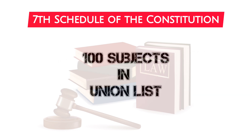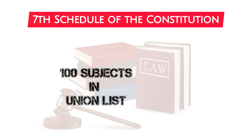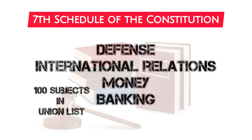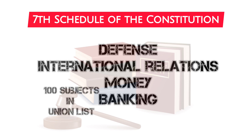There are 100 subjects on the Union list that are solely the responsibility of the Union government. Defense, international relations, money, and banking are a few of the subjects involved.